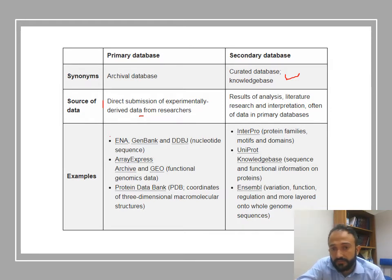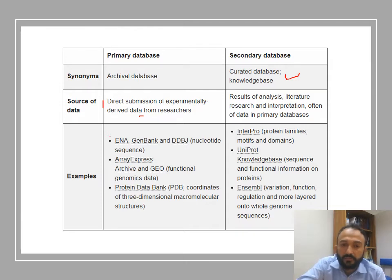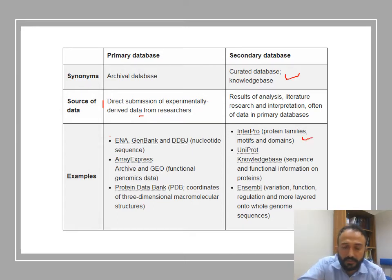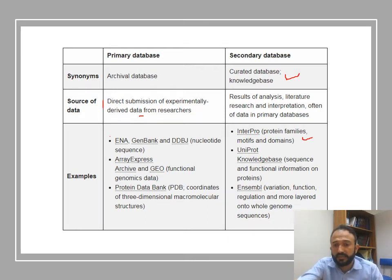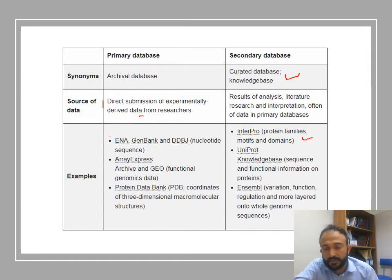Secondary databases are generated from primary sources. InterPro is a database of protein families, motifs, and domains identified from protein or DNA sequences. UniProt is a knowledge base browser of protein sequence and function information. Ensembl is a browser containing variation, function, regulation, and whole-genome analysis — for example, the human genome and mouse genome information discussed in introduction lectures is stored in Ensembl.